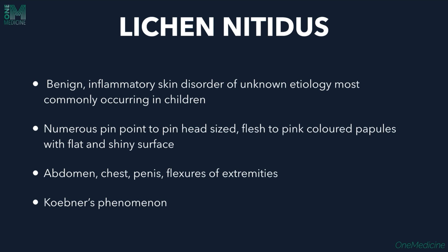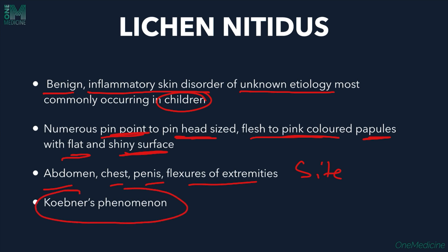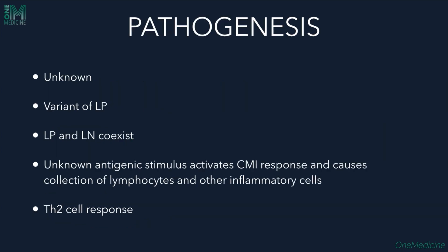Coming to lichen nitidus — it is a benign inflammatory skin disorder of unknown etiology, most commonly occurring in children. It presents with numerous pinpoint to pinhead-sized flesh to pink colored papules with a flat and shiny surface. The most common sites are the abdomen, chest, penis, and flexors of the extremities. Koebner's (isomorphic) phenomenon is present, so lesions occur at the site of trauma. It is considered a variant of lichen planus, and both can coexist in the same individual.